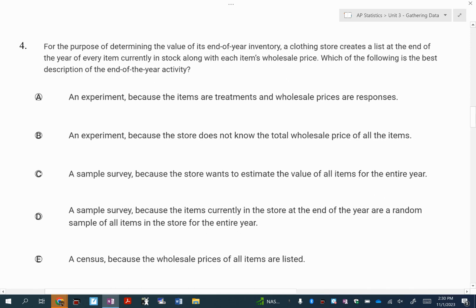Number four. In this one, they're saying they're creating a list at the end of the year of every single item that's in stock. The moment they say every single item, they're talking about a census because they're looking at everything in the store. They're not sampling, that would be just some of them. An experiment would have to randomly assign a treatment, and there's no random assignment of treatments happening in number four.